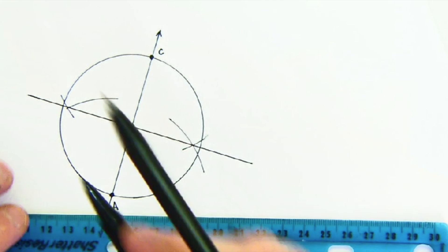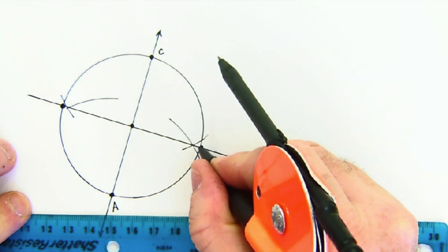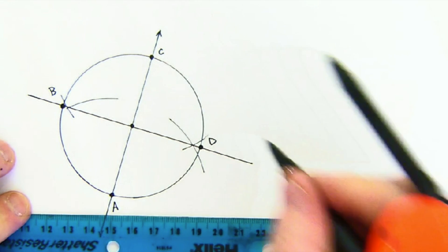Now, we knew that the center was the midpoint, didn't we? Because that was a diameter. So, we knew we'd go through the center and we would form two new points.